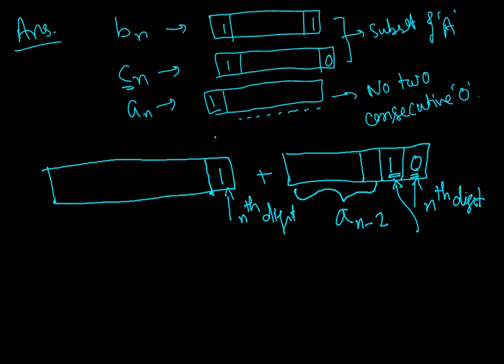If I am ensuring that up till here there is no two consecutive zeros, then over here the given condition will be satisfied. That means there won't be any two consecutive zeros.